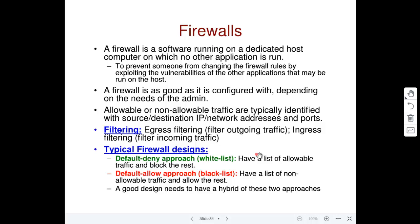The kind of traffic to allow or block is typically identified using the source and destination IP address, or the network address of the source and destination, as well as the port numbers of the source and destination application. These are the typical field values used by a firewall to decide whether to allow traffic or not.